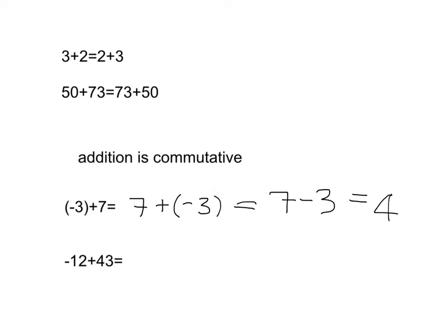All right, you try one now. If I ask you to do negative 12 plus 43, you can kind of see this like you've got negative 12 and you're adding on 43, order doesn't matter so you can use that commutativity to make it easier. Pause the video, try it now and we'll go over it together after that.